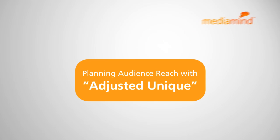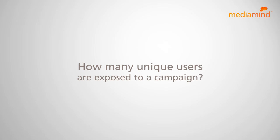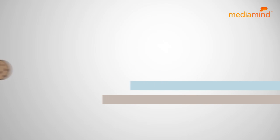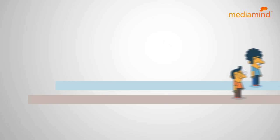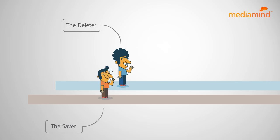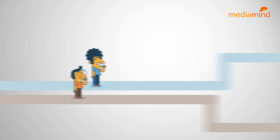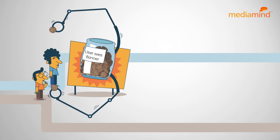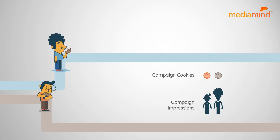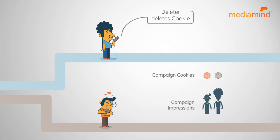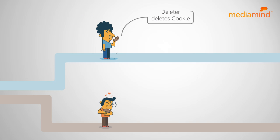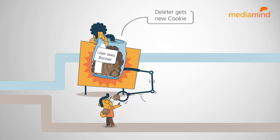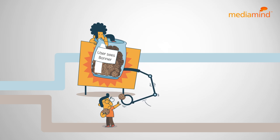Every advertiser wants to know how many unique users are exposed to a campaign. But simply counting cookies isn't the best way. Why? Because the world is full of cookie deleters, which means every subsequent impression to an ad campaign generates a new cookie — which can mean a lot of cookies for the same user, who gets counted over and over again as a new unique user.